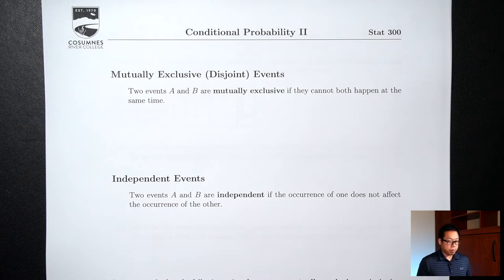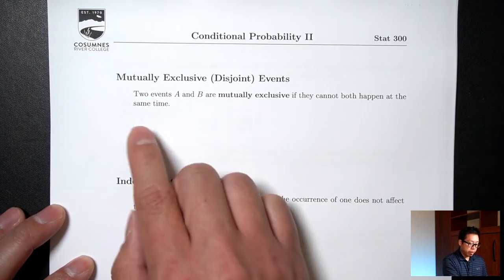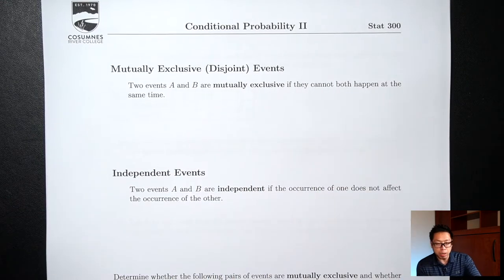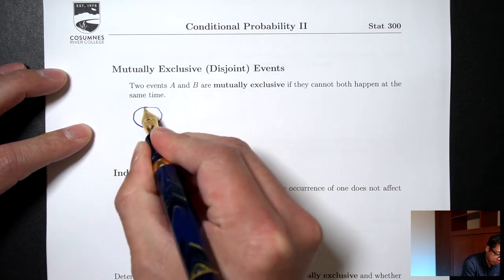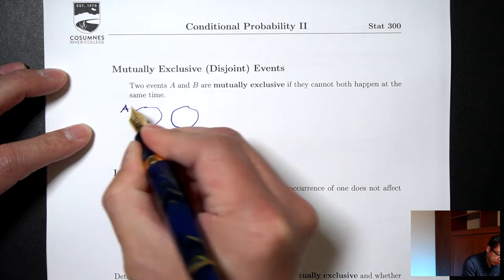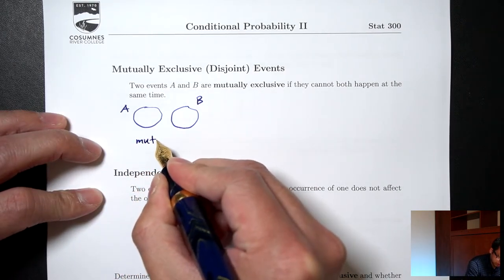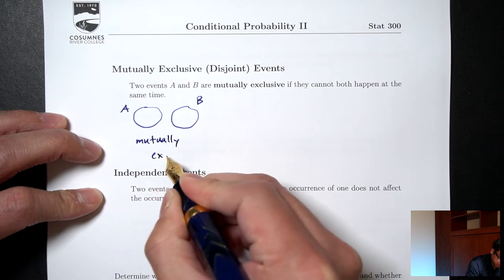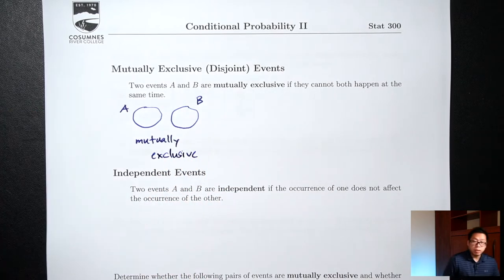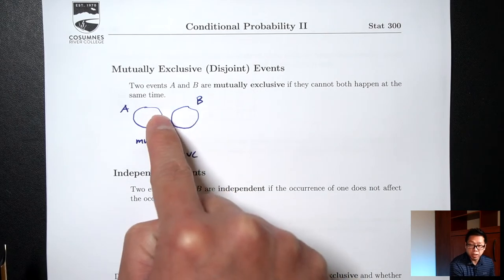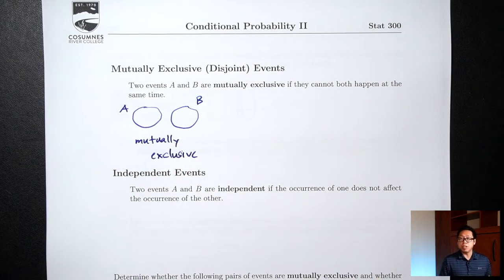We'll start today by introducing two ideas. The first is mutually exclusive. Two events A and B are mutually exclusive if they cannot both happen at the same time. Visually, I can represent this with two circles that don't overlap. That's a representation of mutually exclusive — you cannot be in both circles at the same time. If you're in circle A, you are definitely not in circle B, and vice versa. So these two events mutually exclude each other from happening.